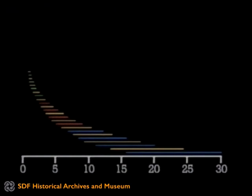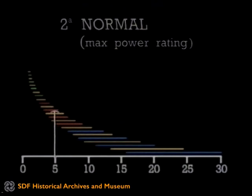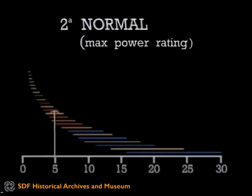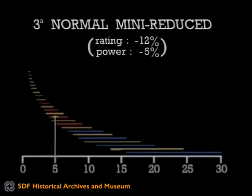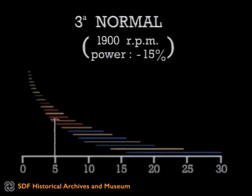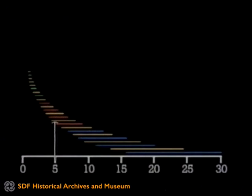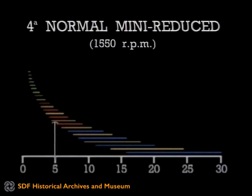Why is it important to have such a close ratio gearbox? Consider, for example, the need to work at a speed of 5 km/h. When the work is demanding maximum power, such as in heavy ploughing, then the gear used will be second normal, with the engine running at full RPM. For work requiring less power, instead of using second gear, we can obtain the same speed in third gear normal, with mini reduction engaged and the engine RPM reduced by 12%, giving a slight power reduction of 5%. Alternatively, using third normal at 1900 RPM, we can still maintain the same speed with a power loss no greater than 15%. For very light work, it is possible to throttle the engine down to 1550 RPM and use fourth normal mini reduction, still achieving the same forward speed.